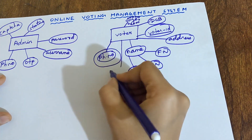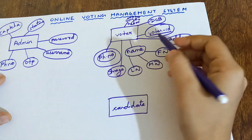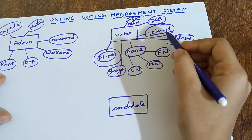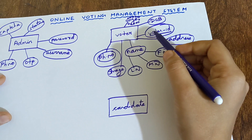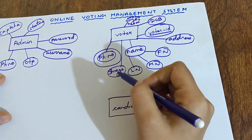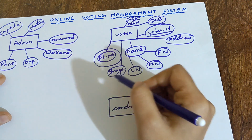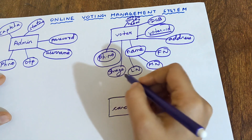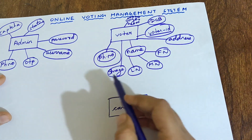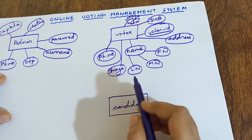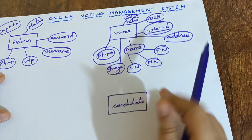The image of the Voter is also an important attribute. In the Voter ID card, there will be an image. That image should match with the current passport-size image you are uploading on the website. Only if it is matching can we proceed further — otherwise you cannot. So image is also an important attribute of the Voter entity.